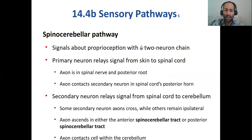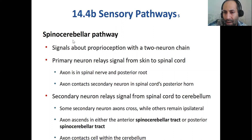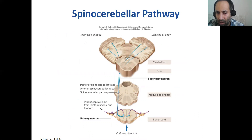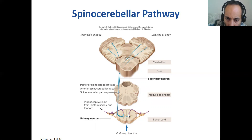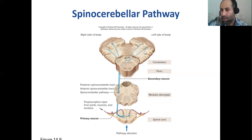The spinocerebellar pathway goes from your spinal cord up to your cerebellum, carrying your sense of position regarding joints, muscles, and tendons. The cerebellum is about muscle memory. The primary neuron is in the spinal cord, then it rises through the medulla oblongata where you have the secondary neuron, and then moves on to your cerebellum — only primary and secondary neurons here, not a tertiary neuron.